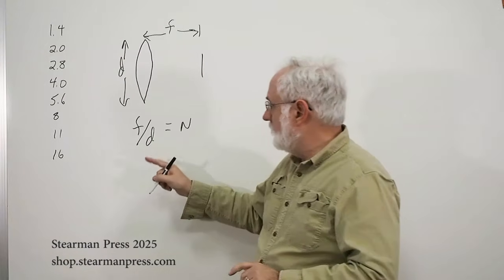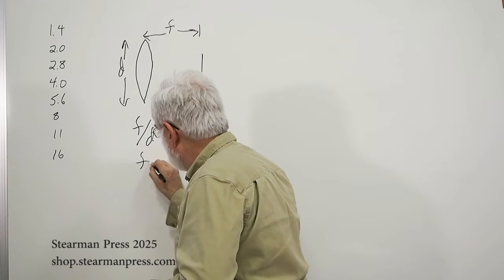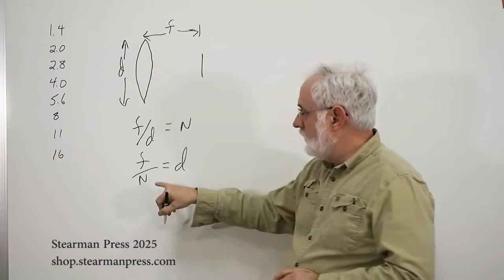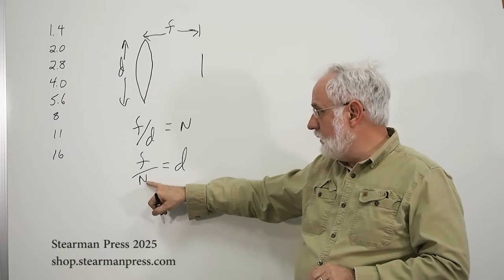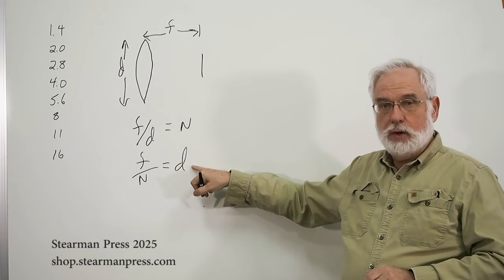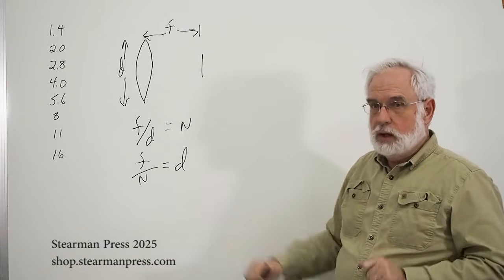Well, to calculate that out, what they did is they switched this formula around. And now, if I know I want to shoot at f4, I know the focal length of my lens, I know the diameter of the hole I need in the disc.